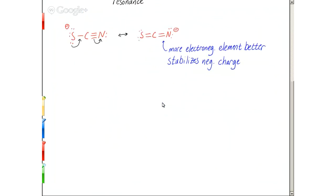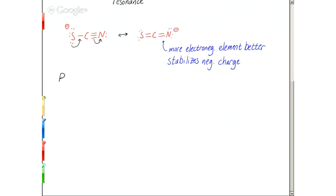Let's review one more aspect while we're talking about electronegativity — let's talk about polarity and dipole moments. How do we determine if a bond is polar? Just one single bond. If there's a difference in electronegativity, we call that a polar bond. About how big of a difference? About 0.5 — and that's just kind of a convention.